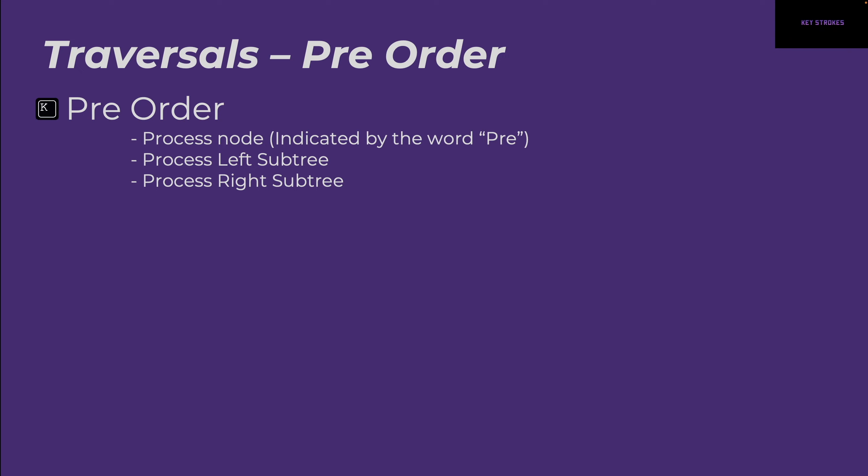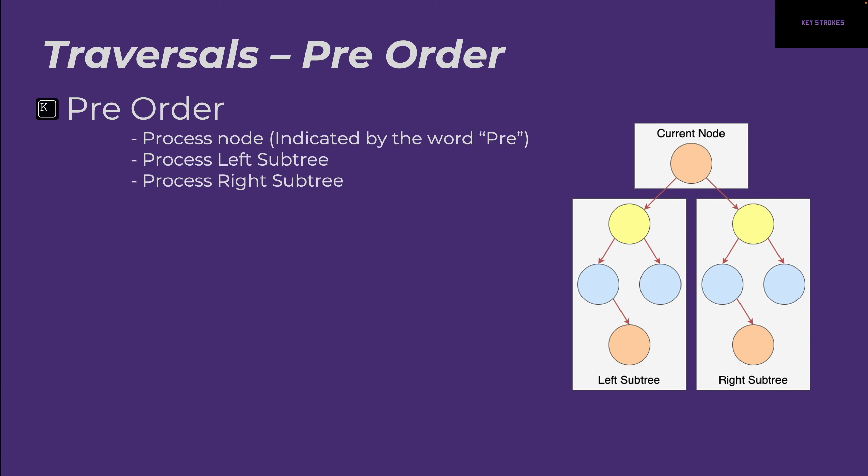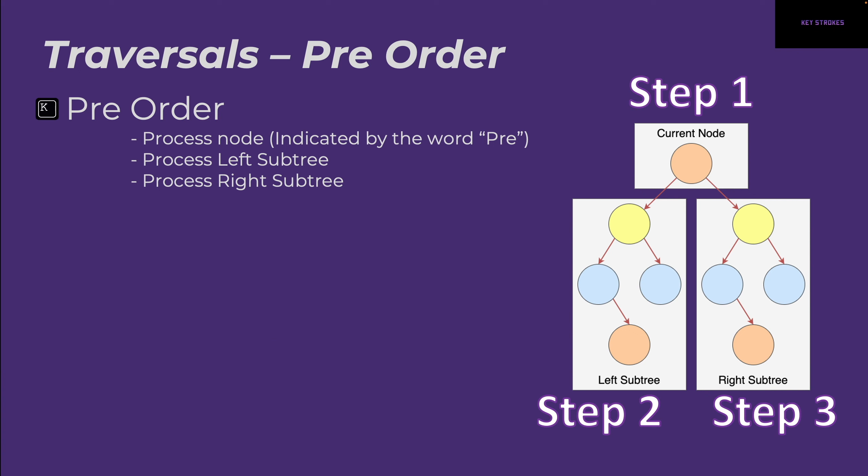Let's start with pre-order. In pre-order, you always process yourself first — the current node. This is indicated by the word 'pre', meaning I come first. Then you process the left subtree, and then the right subtree. In a diagram, a tree is broken into three parts: the current node, the left subtree, and the right subtree. Following the order of processing: first the current node, then the left subtree, then the right subtree.